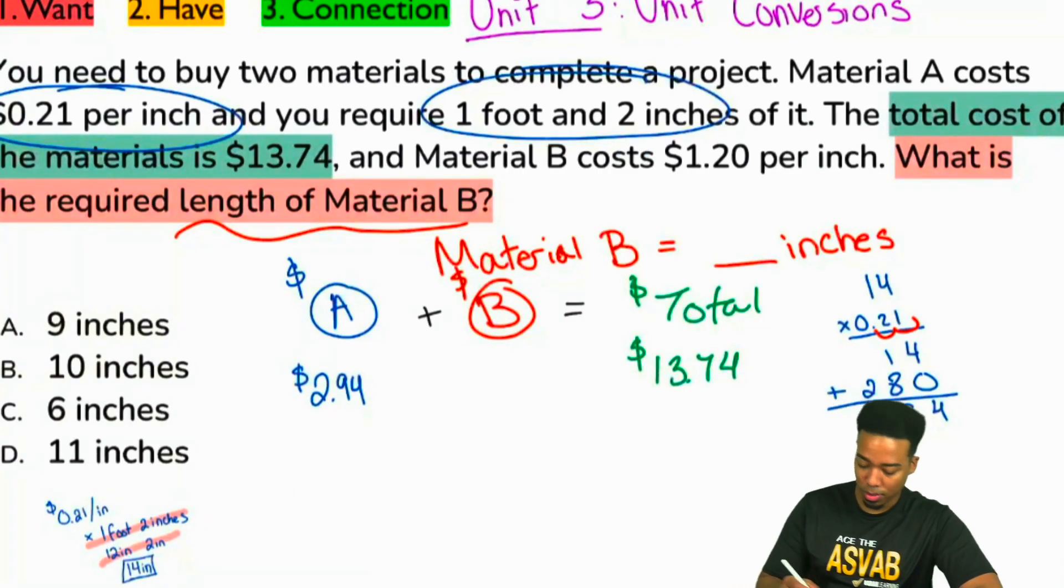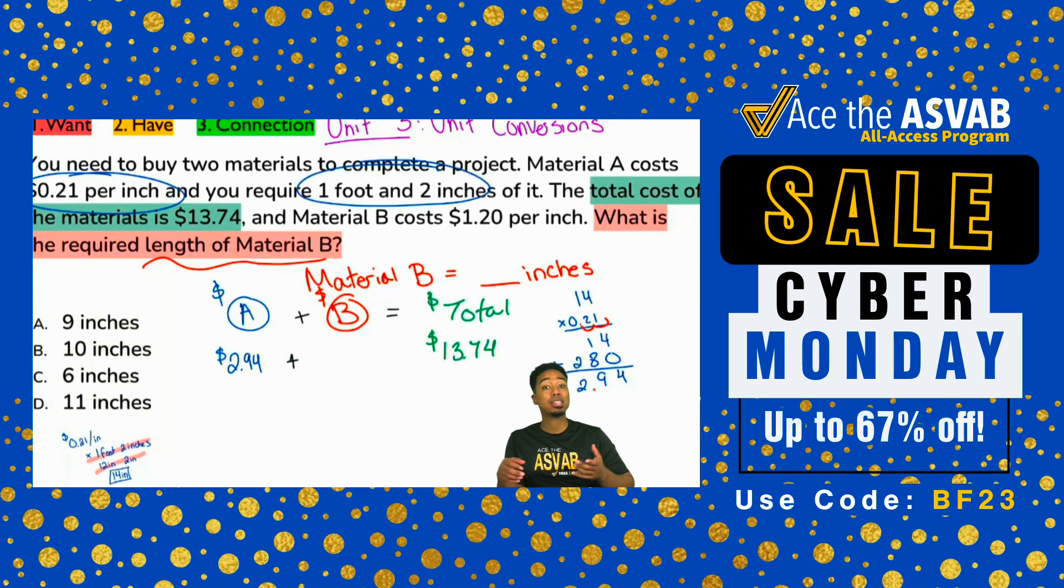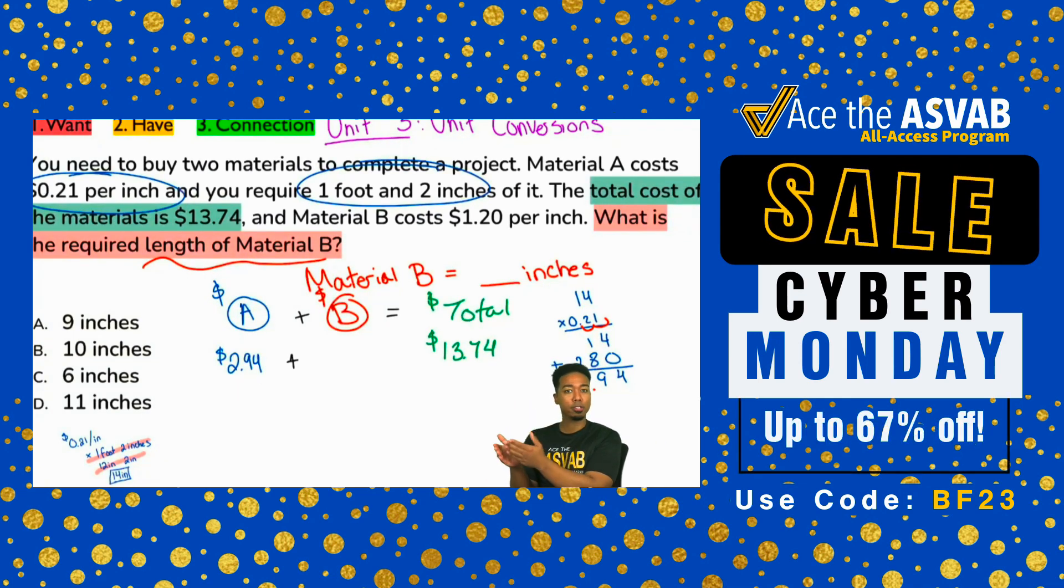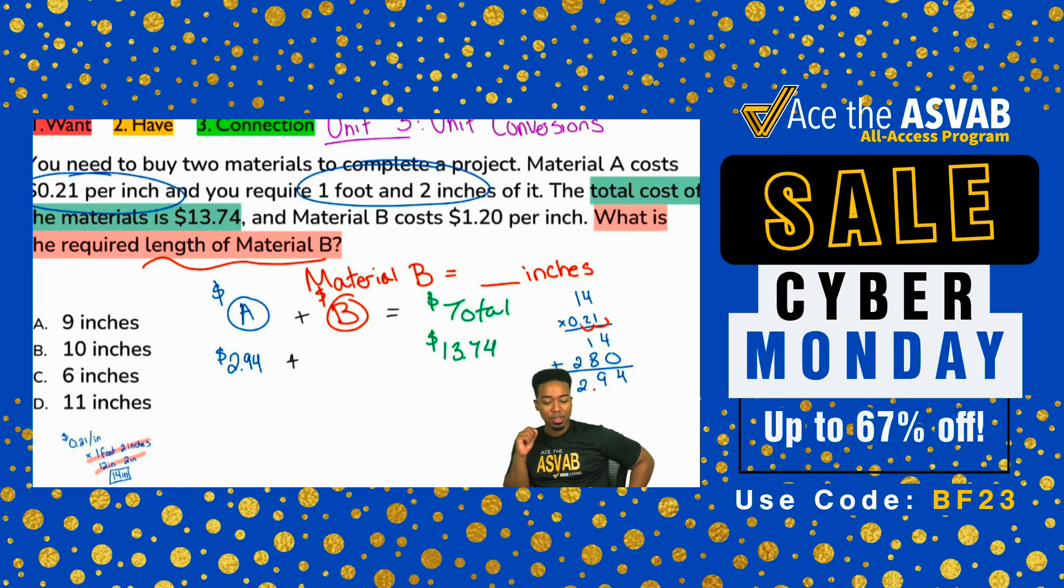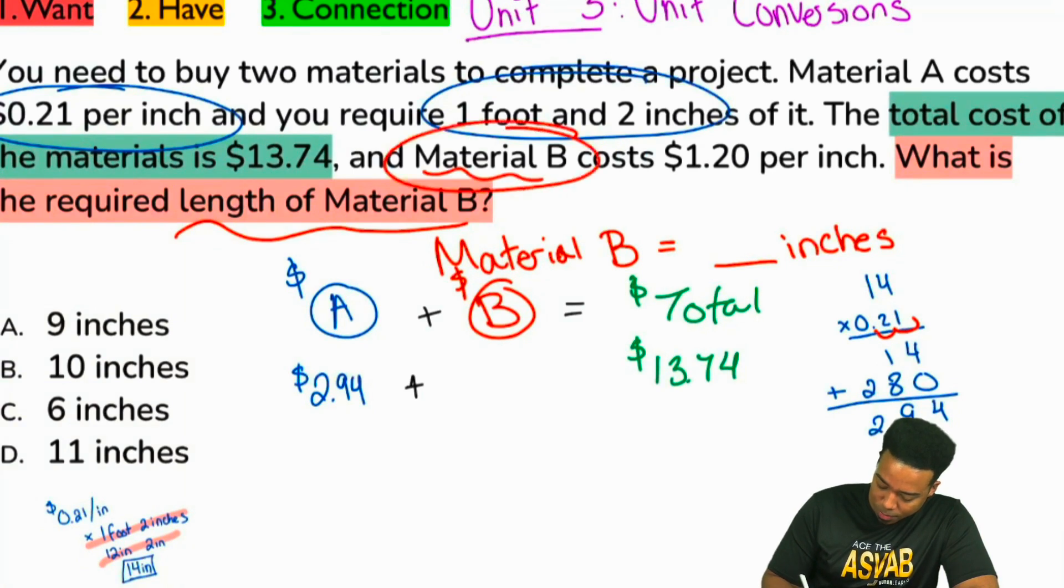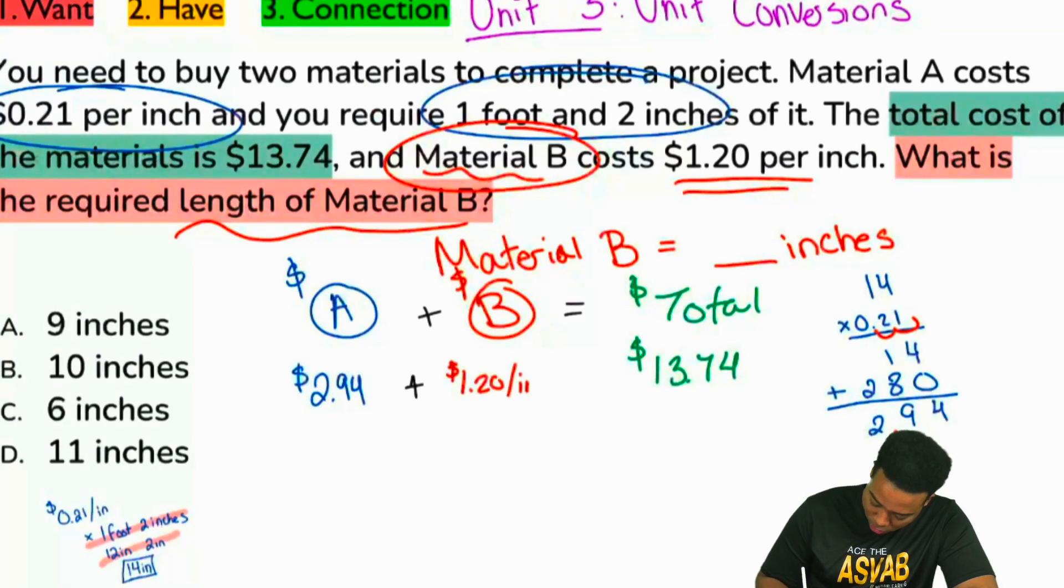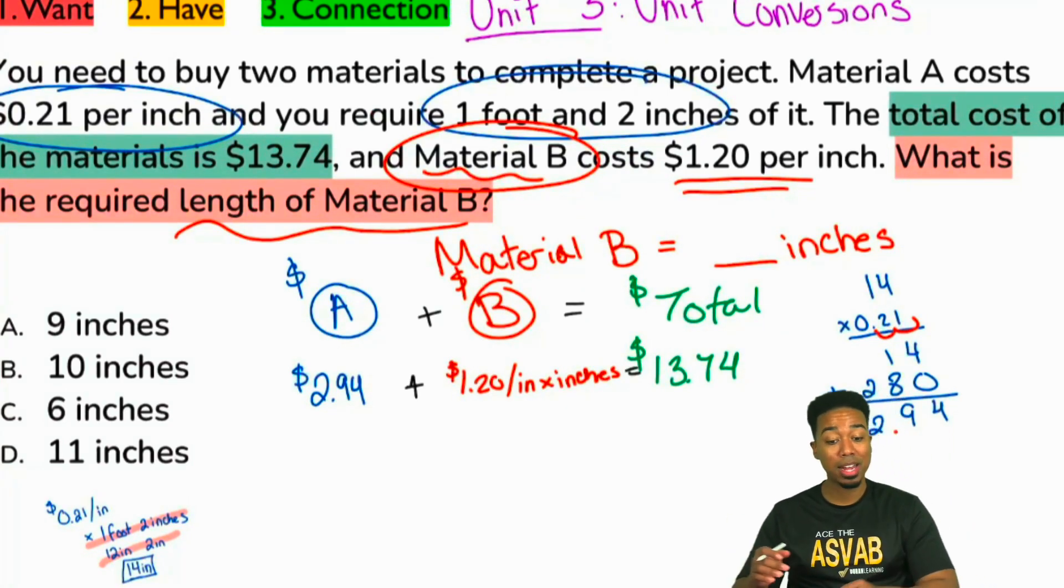Now, why does that help us? Watch this, everybody. We found the cost of material A by taking the cost per inch times the number of inches. Everybody, how would we find the cost of material B? Would it be the same exact way? Finding the cost per inch times the number of inches, is that the same exact way that we would do it if we had the numbers? Yeah, absolutely.